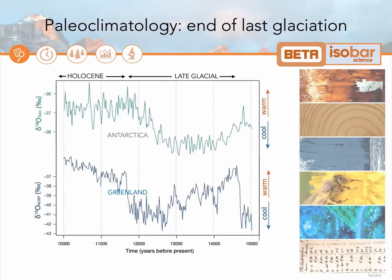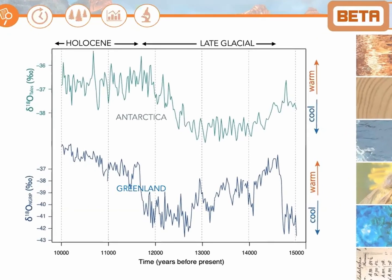Now we can go even deeper in time using other climate records, including ice cores as shown here. With Antarctica δ18O, which represents temperature in green, and Greenland δ18O in blue, both spanning approximately 10,000 to 15,000 years before present during the end of the last glaciation. Using this data, scientists have confirmed that the warming into the current Holocene was inundated with climate oscillations and cooling events spanning thousands of years.